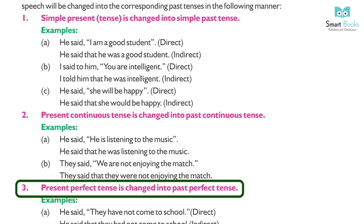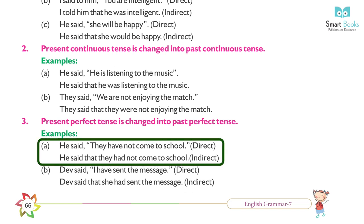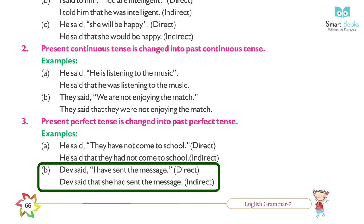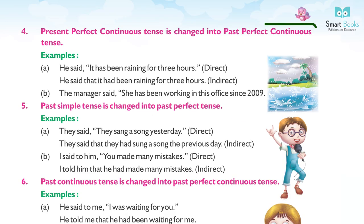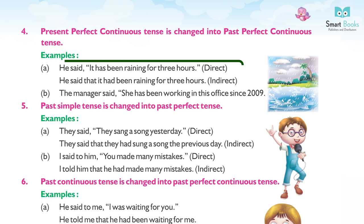Examples for Present Perfect → Past Perfect: (a) He said, 'They have not come to school.' (Direct) → He said that they had not come to school. (Indirect) (b) They said, 'I have sent the message.' (Direct) → They said that he had sent the message. (Indirect) (4) Present Perfect Continuous changes to Past Perfect Continuous.